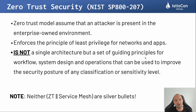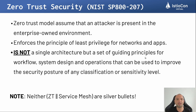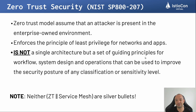But what is zero trust security nowadays? NIST has a specification called SP-800-207, where it says the zero trust model assumes that an attacker is present in the enterprise-owned environment. So any workload, independent of the environment, is not trustable unless proven. It enforces the principle of least privilege for network and applications. Zero trust security is not a single architecture, but a set of guiding principles for workflow, system design, and operations that can be used to improve the security posture of any classification or sensitive level.